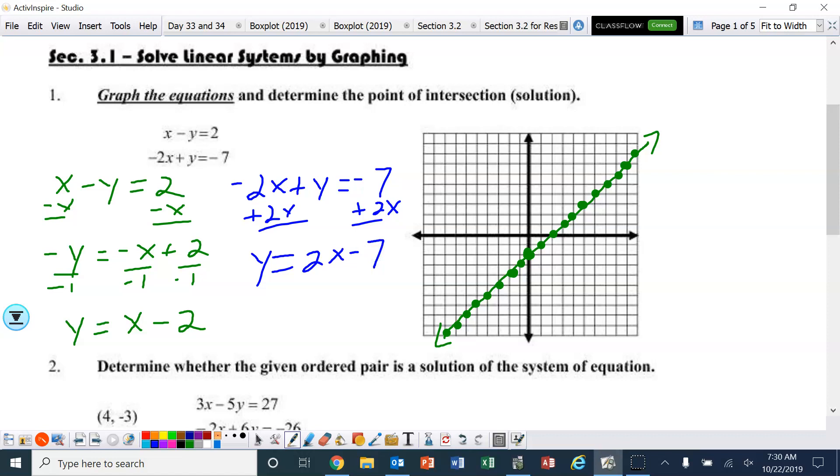Our y-intercept is at negative 7, right here. And the slope is up 2 over 1. And it looks like they are crossing right here. But first, let me draw that line. A little bit off.